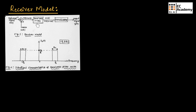The band pass filter used in the receiver model will perform the combined operation of filtering as well as the tuned amplifier — it acts as both a tuned amplifier and a filter. The bandwidth of the band pass filter is kept wide enough so that the signal S(t) can easily pass without any distortion.